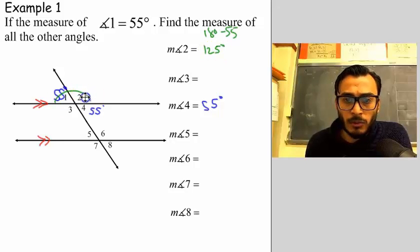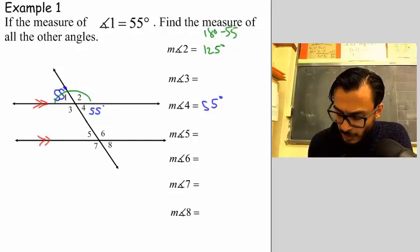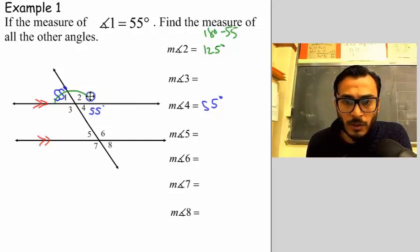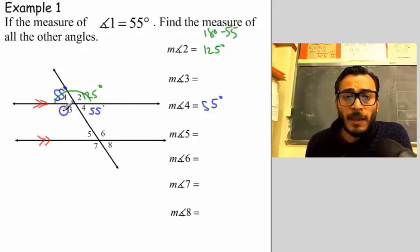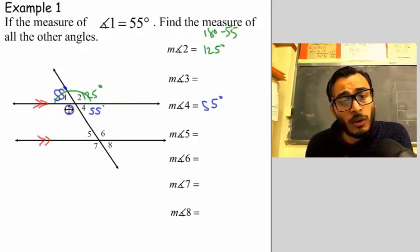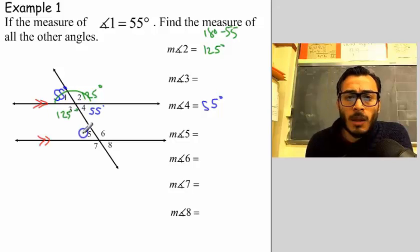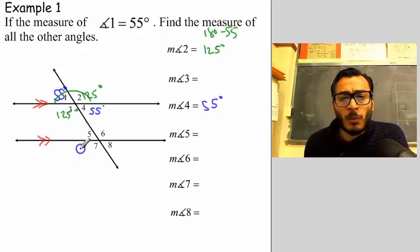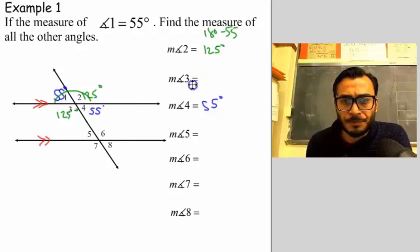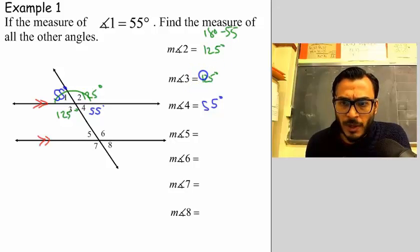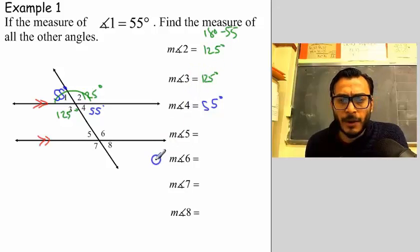So angle two is 125 degrees — let me go ahead and write 125 here. And then we know that by default, angle three is also 125 because these are vertical to each other. Let me go ahead and write 125 for angle three.